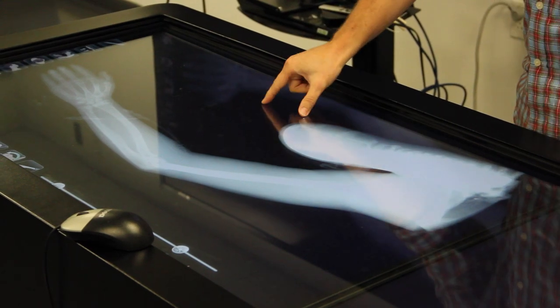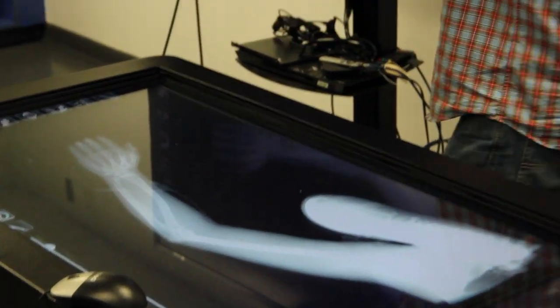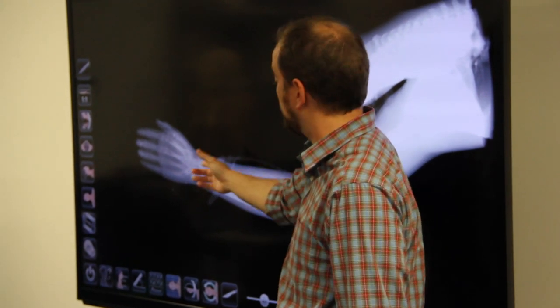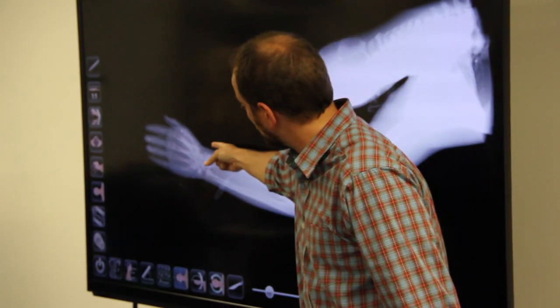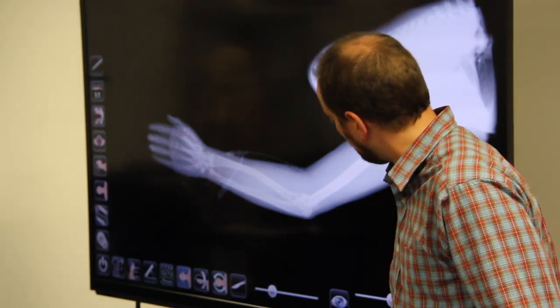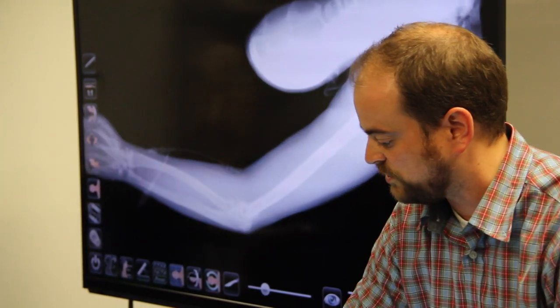So we can see a lot of those same structures. We can still identify where the scaphoid and lunate are down here at the distal end of the radius. We can see where the epiphyseal plates would be. Now we can see our orientation, we'll zoom in a little bit.